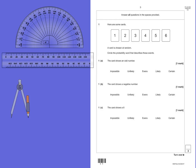Question 1. Here are some cards: number 1, 2, 3, 4, 5 and 6. A card is chosen at random. Circle the probability word that describes these events.